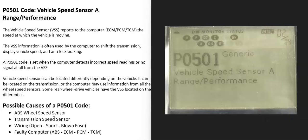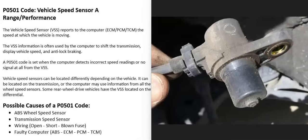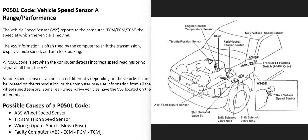Today I'm talking about a P0501 code — what it is and how you could go about fixing it. A P0501 code is a vehicle speed sensor range/performance code. The computer needs to know how fast the vehicle is moving for different functions, such as driver assist programs, anti-lock braking systems, and transmission shift points. When you get this P0501 code, the computer is seeing a problem with the vehicle speed sensor — it's not working the way it should.